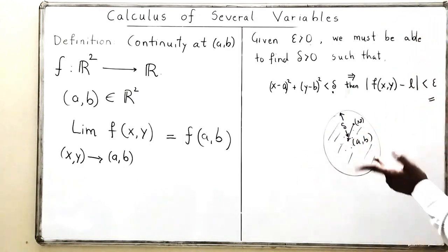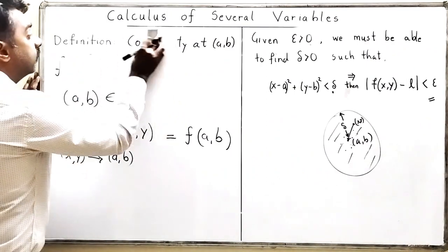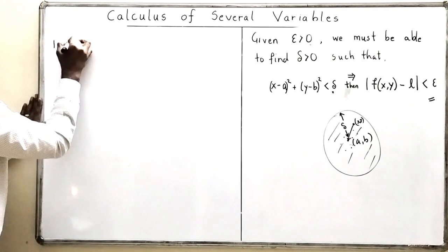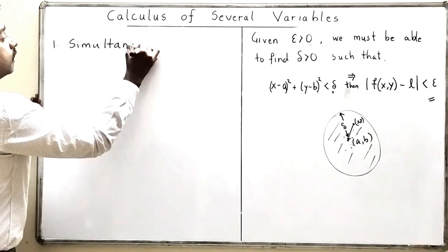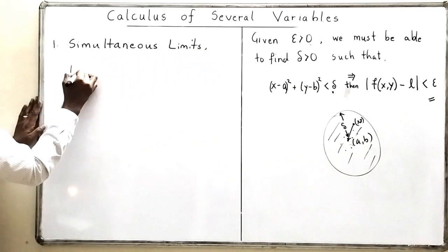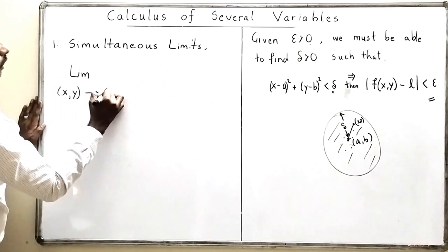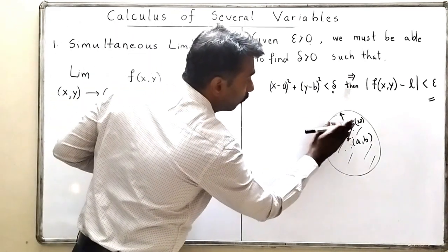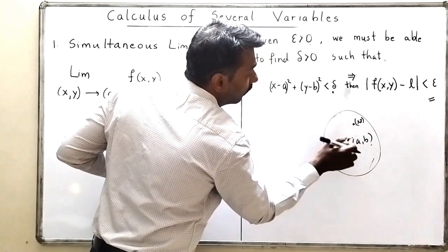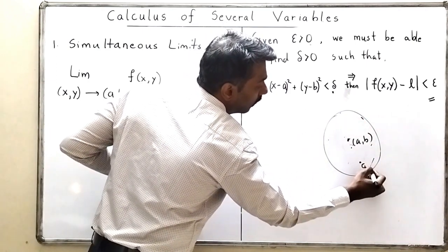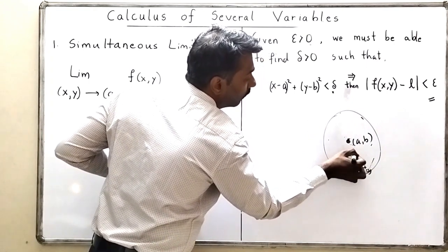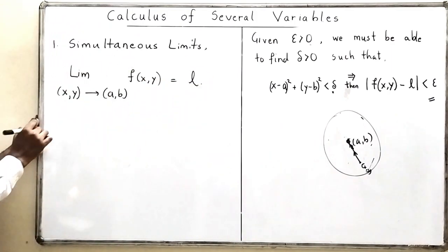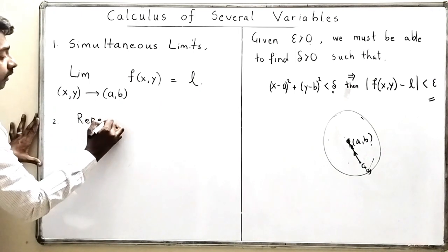I hope the definitions of continuity and limit are both clear. We will discuss problems in the next lecture. Now there are two types of limits in this chapter. The first type is called the simultaneous limit. In simultaneous limits, x and y both move simultaneously towards the point (a, b), and the limit of f(x, y) as both approach (a, b) equals some value L.